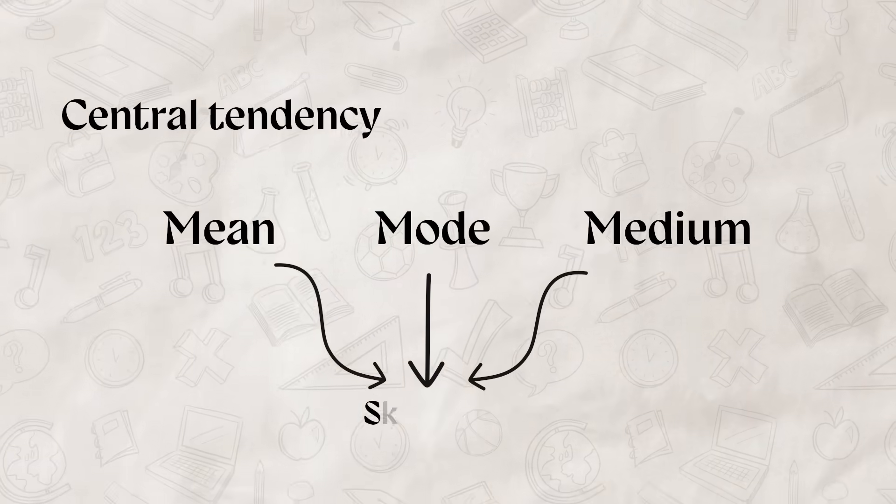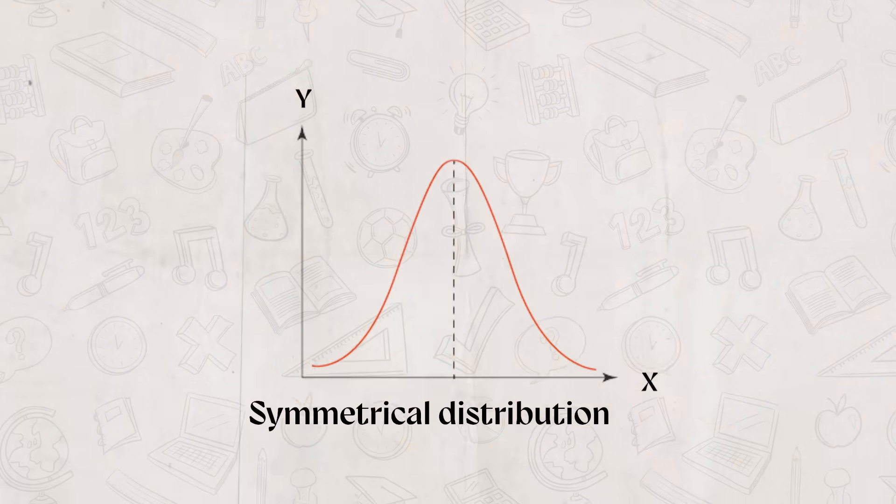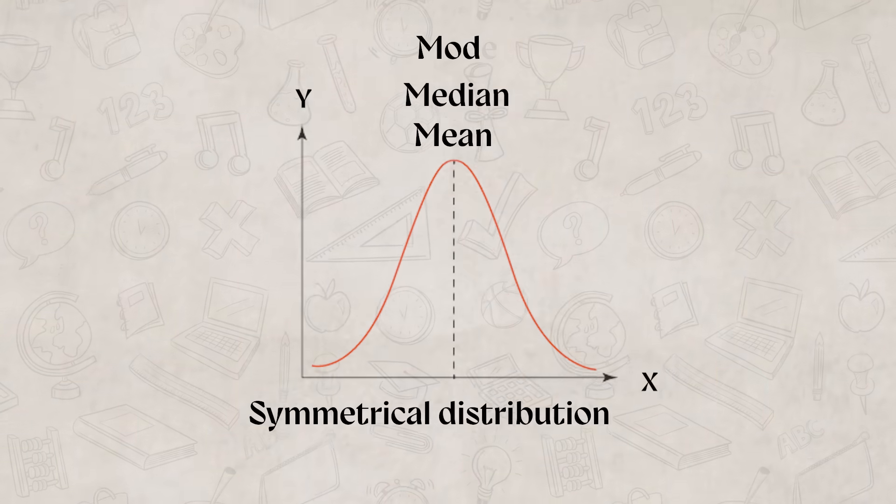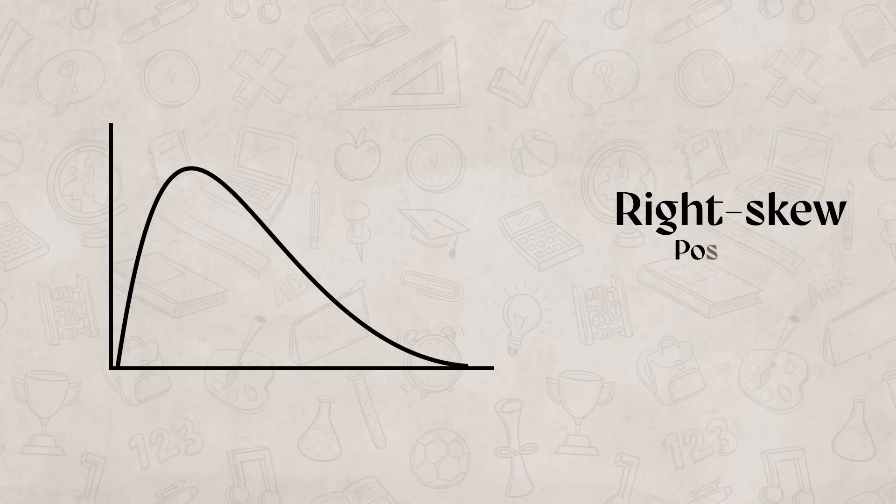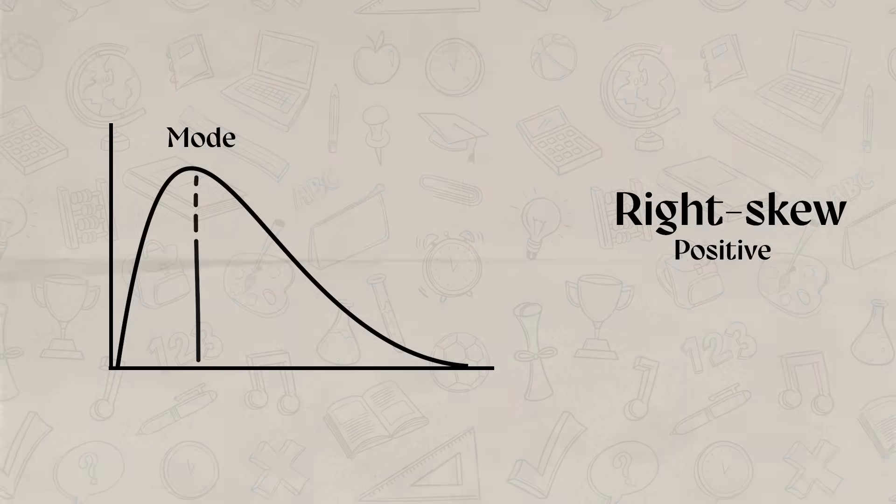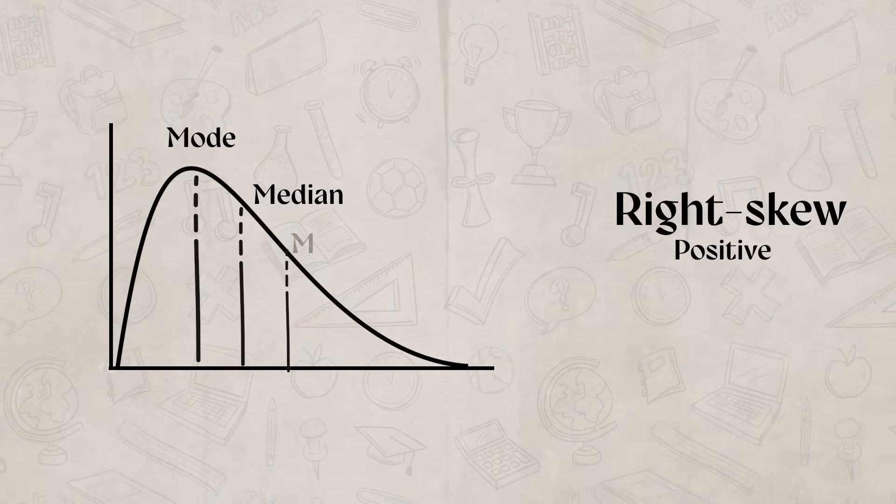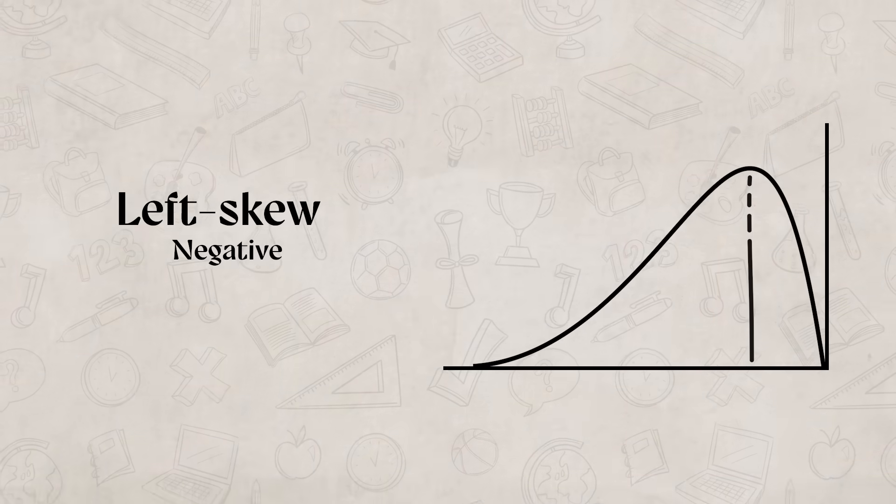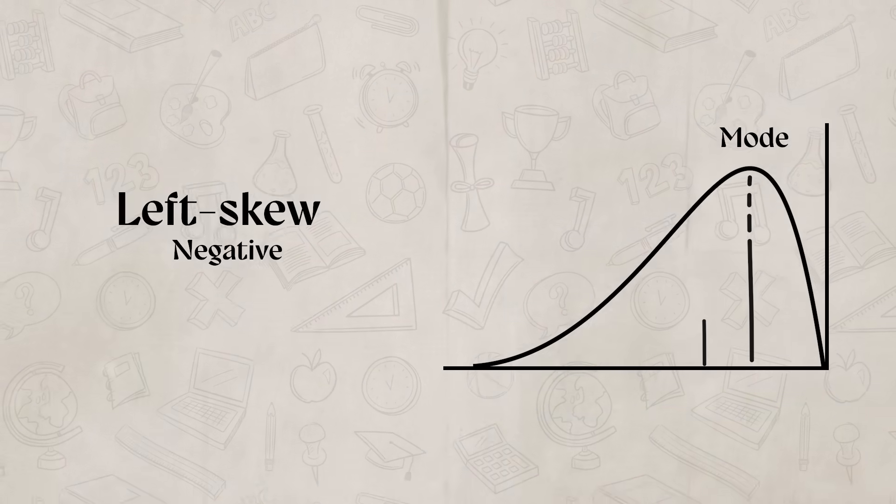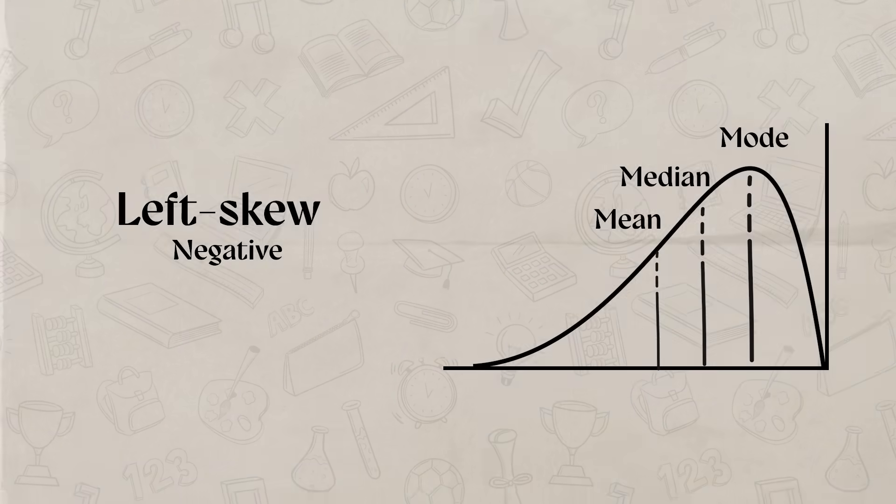We can also see that the central tendency can connect into skewness. If there is a symmetrical distribution, it means that the mean, the median, and mode all coincide at the center point. If there is a right skew, which would be positive, it means that the mode is usually at the peak of the distribution. The median is located to the right of the mode and the mean is located to the right of the median. If there is a left skew, which would be negative, it means that the mode is usually at the peak of the distribution again. Now, the median is located to the left of the mode, while the mean is located farther to the left of the median.